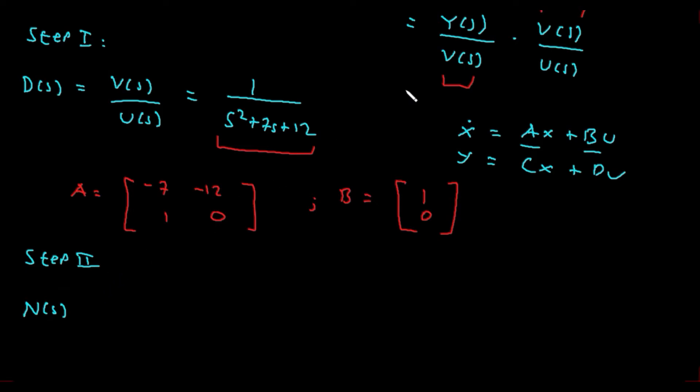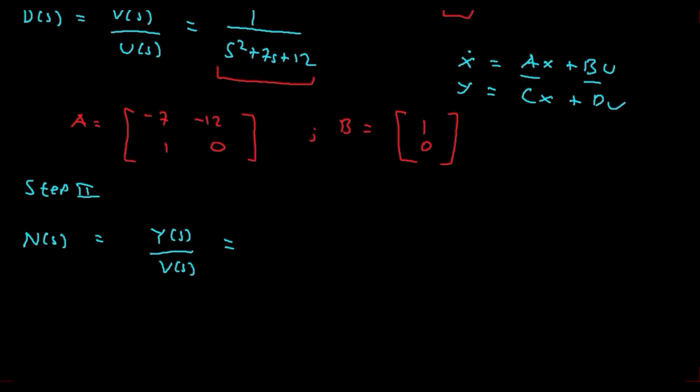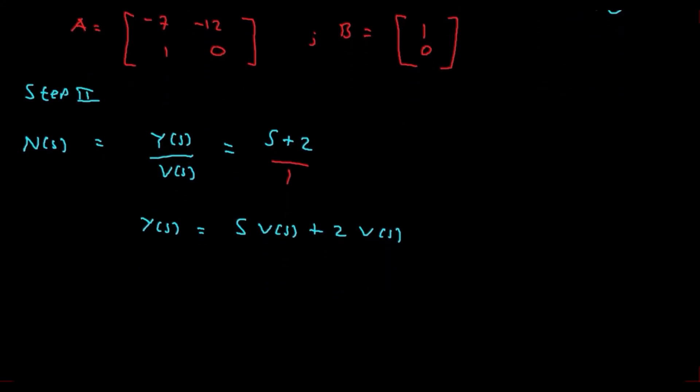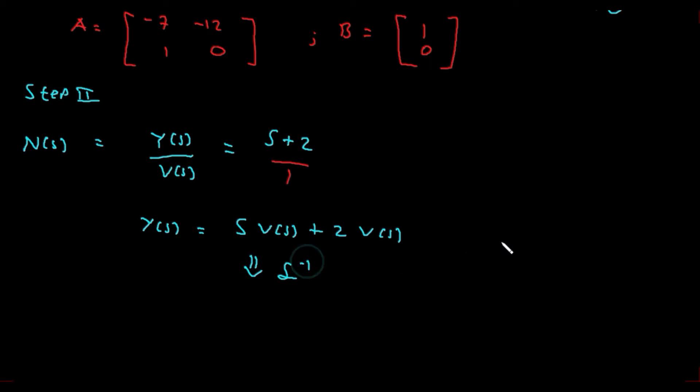The numerator has the Y(s) output value. So we can write N(s) = Y(s)/V(s) = s+2. From here we just cross multiply. Actually s+2 has a denominator of 1, because we substitute V(s) as 1, the dummy variable. Cross multiplying: Y(s) = sV(s) + 2V(s). We take the inverse Laplace to get y = V_dot + 2V.